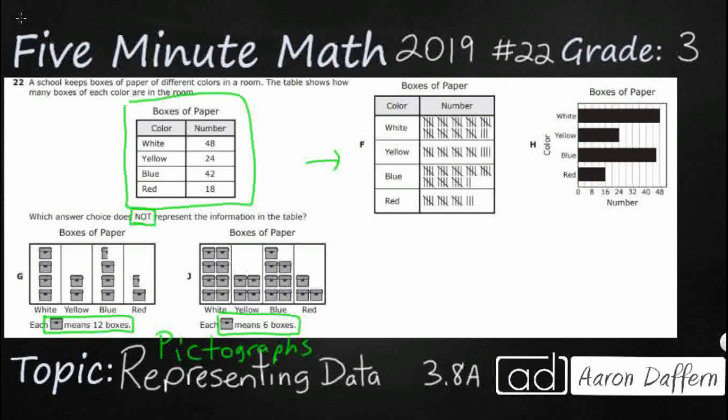So let's start with G. This little box right here equals 12 boxes. So really I've got one, two, three, four boxes. So really it's four times 12. So if I know my 12s, that's good. So that's going to be 48, which works because there are 48 white. And we're going to do it just like that. So I've got two times 12 here. That's going to be 24. That works because I've got 24 there.